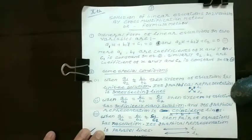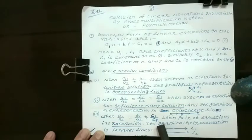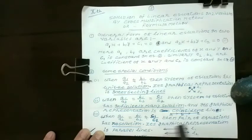Next, condition number three. When a1 upon a2 equals b1 upon b2 is not equal to c1 upon c2, then the pair of equations has no solution. There is no solution.